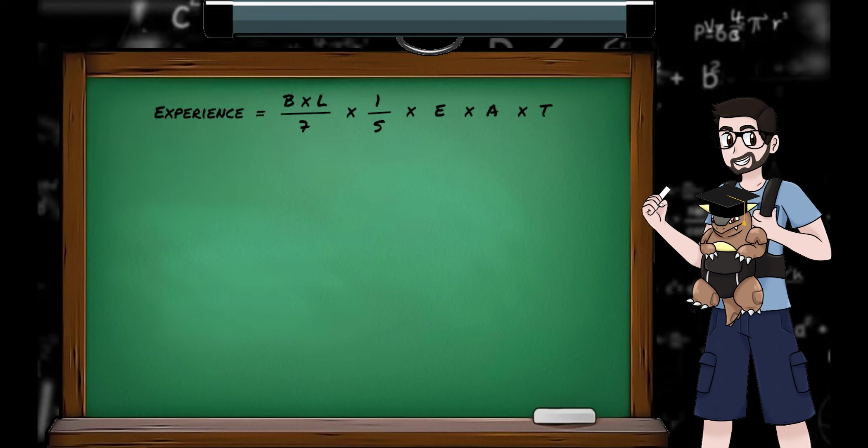As both equations use the same variables, let's work through the Gen 3 one, just to clear up some board space. Starting with B. This is the base experience yield for the defeated Pokemon. Like base stats, this is another hidden in-game value associated with the species.